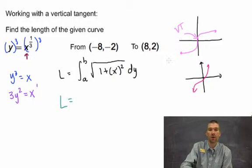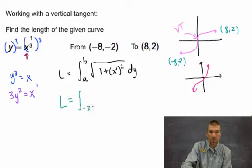Well, we're going from negative eight, negative two to eight, two. So those y coordinates don't change, so we're looking at an integral from negative two to two of the square root of 1 plus 3y squared squared dy.